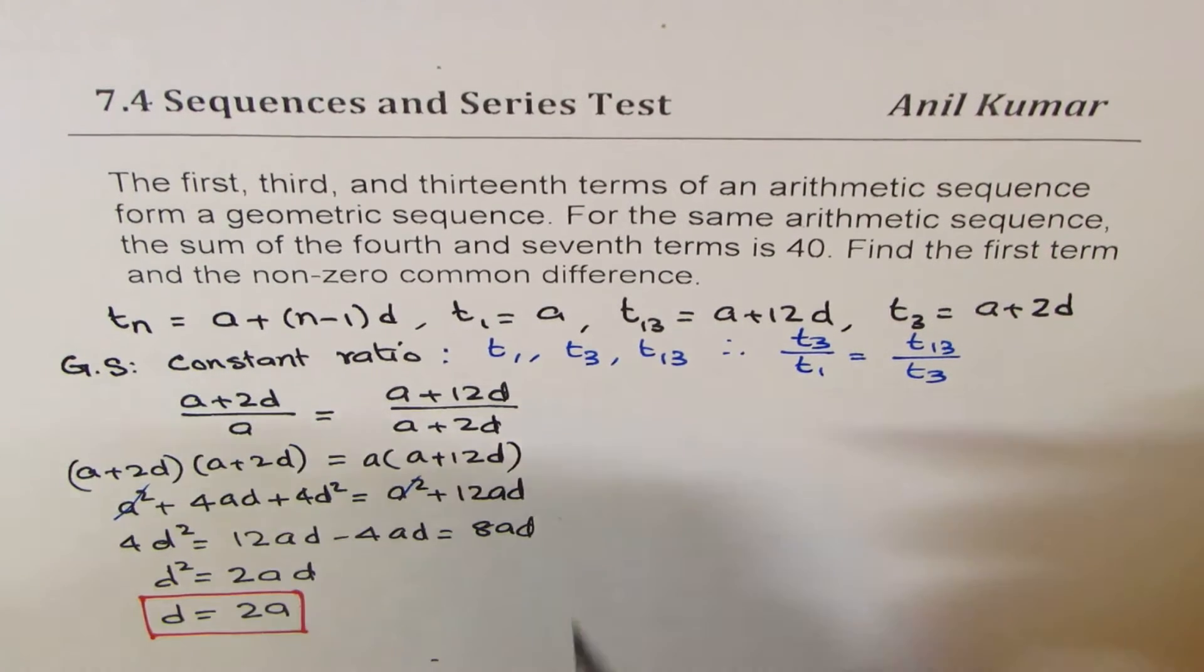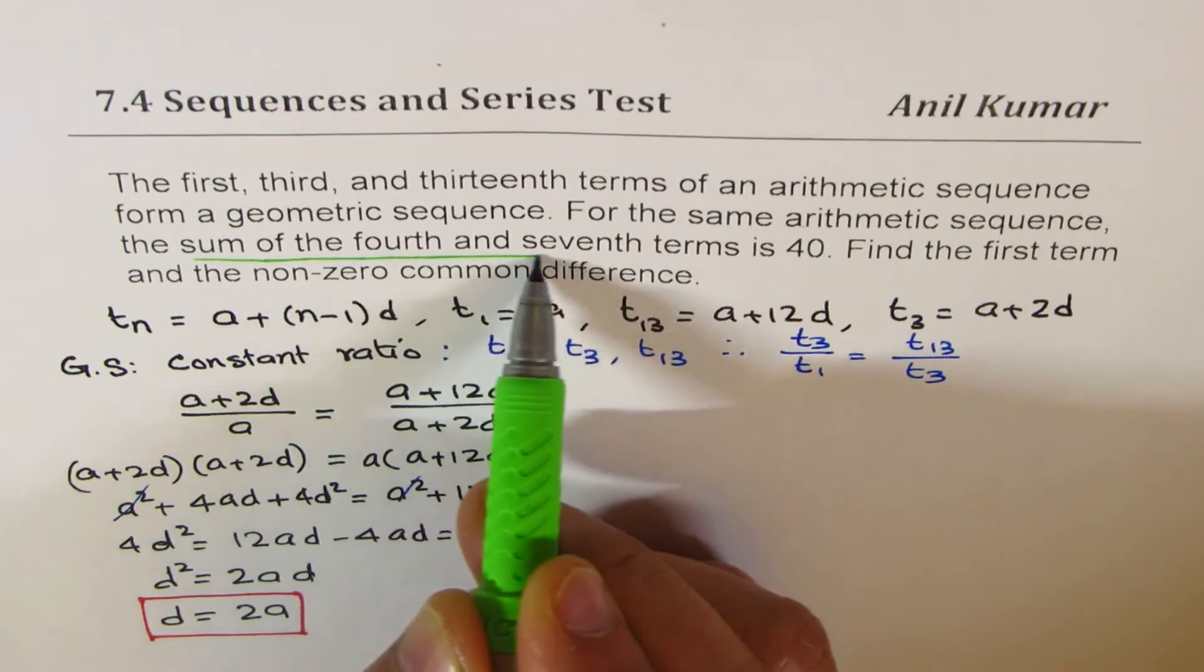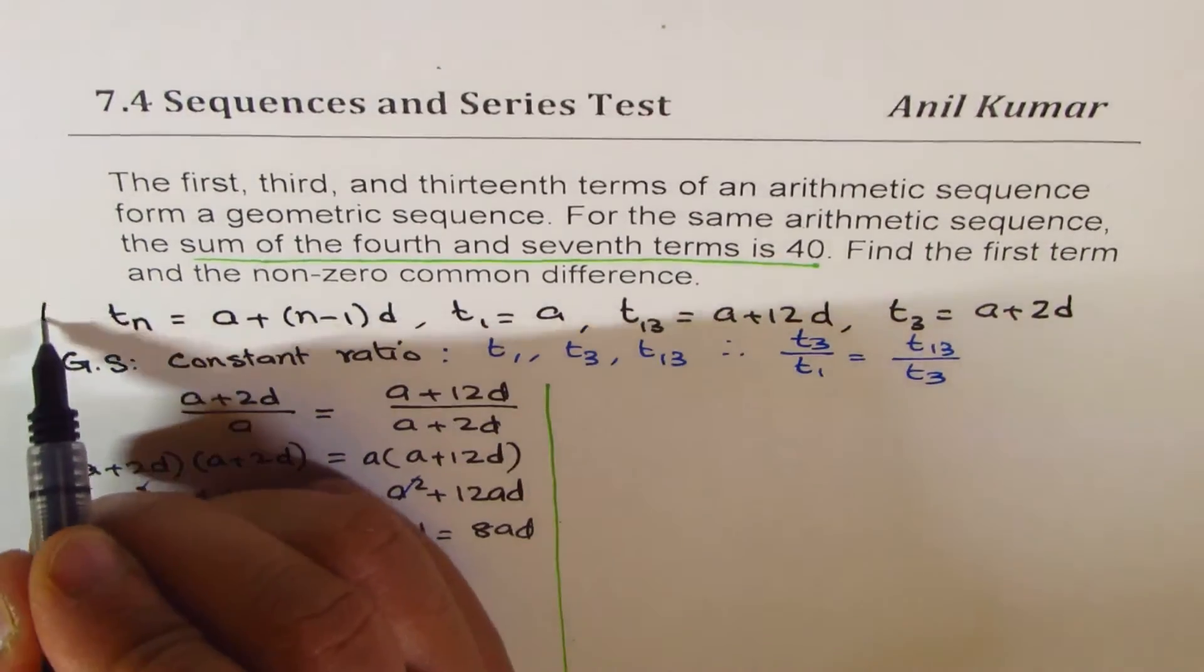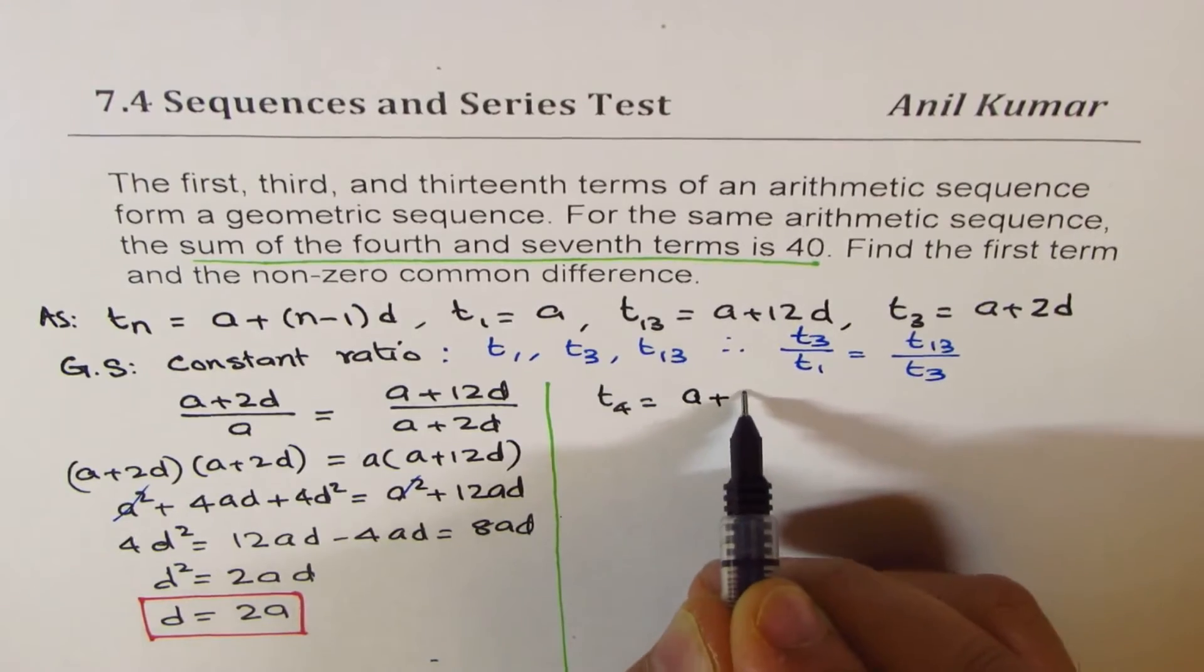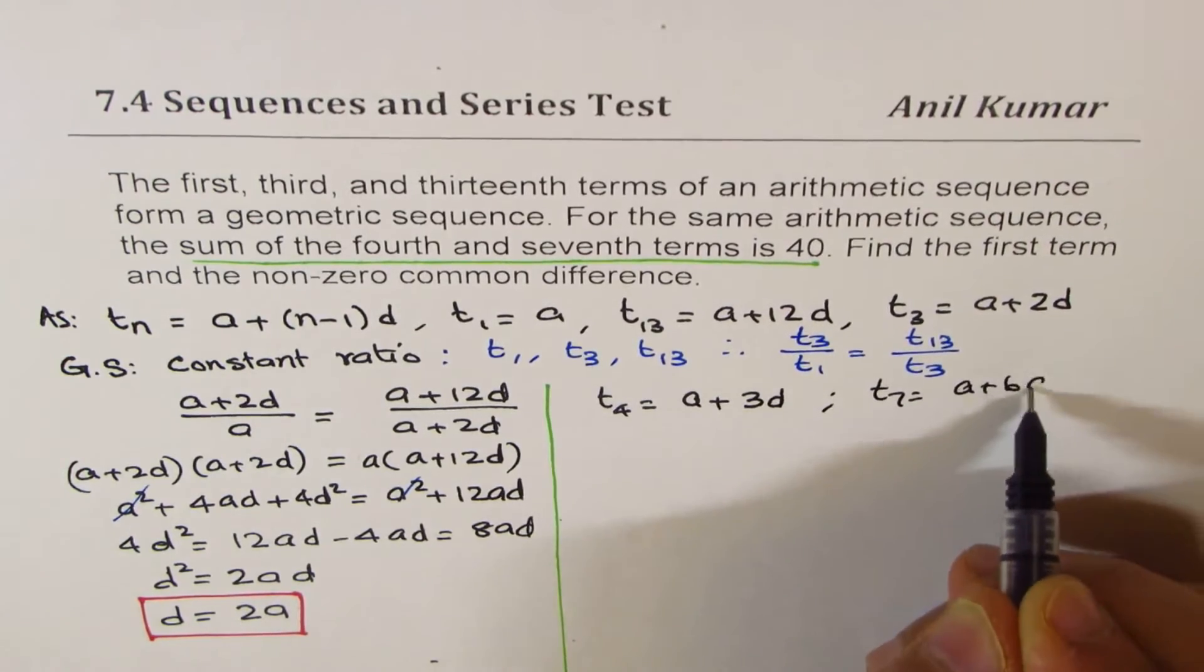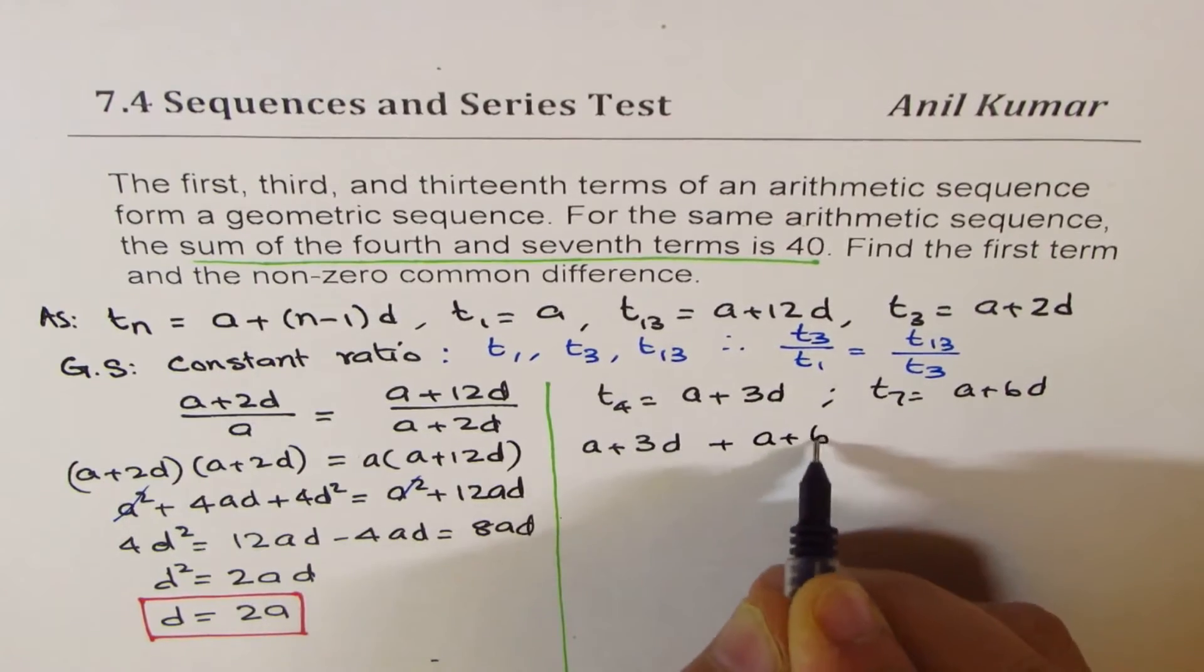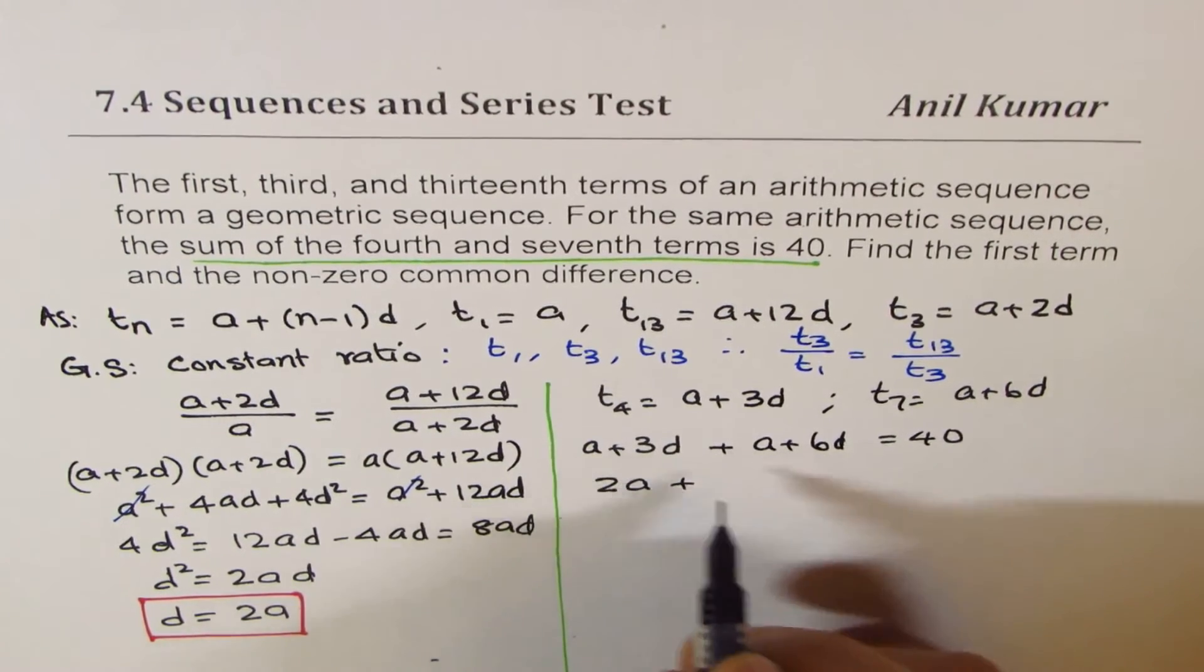Now we are also given another condition which says that the sum of fourth and seventh term is 40. So the fourth term will be a plus 3d, and the seventh term is going to be a plus 6d. So a plus 3d plus a plus 6d equals to 40, which simplifies to 2a plus 9d equals 40.